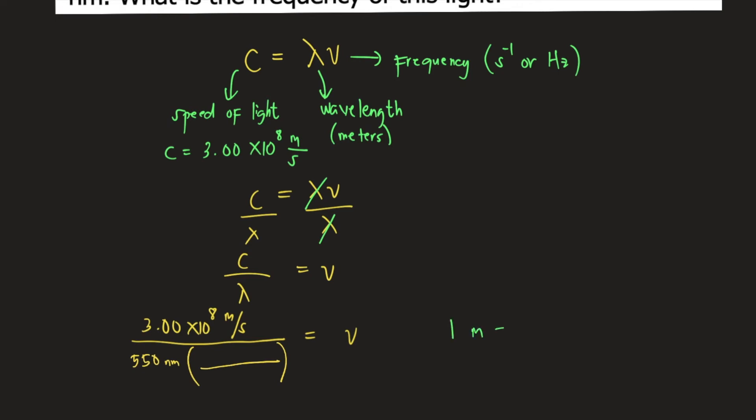1 meter is equal to 10 raised to 9 nanometers. We plug that into our conversion: 10 raised to 9 nanometers equals 1 meter. Nanometers would cancel.